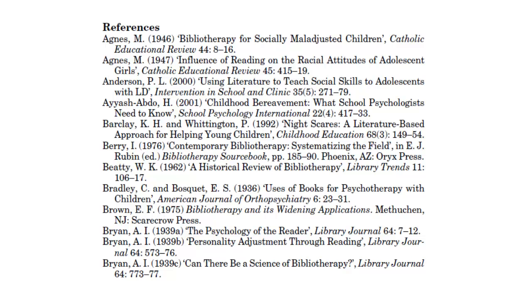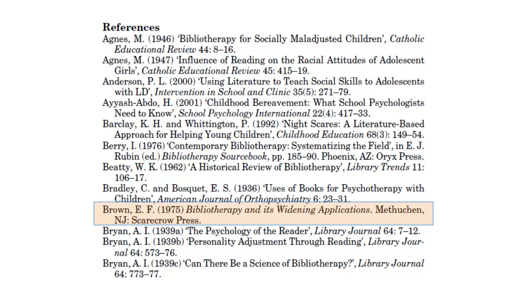For example, I know that this is a journal because it has both an article and journal title and also includes both a volume and issue number. And this is a book because the title is italicized and it gives the place of publication and the publisher's name.